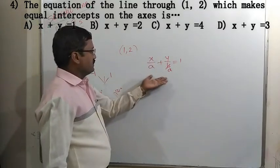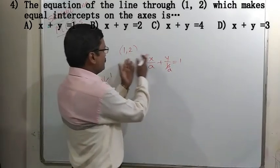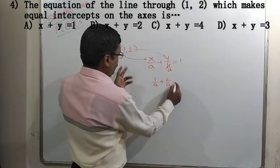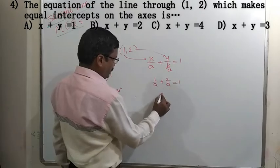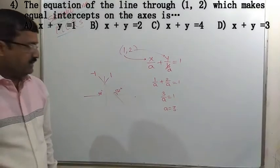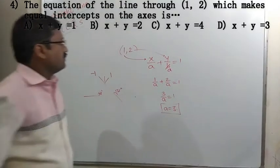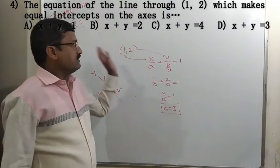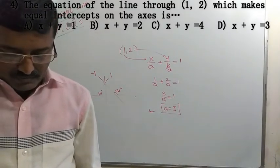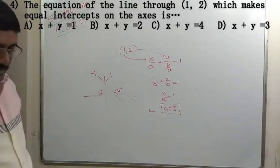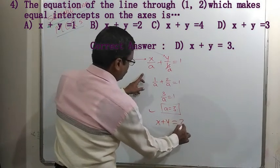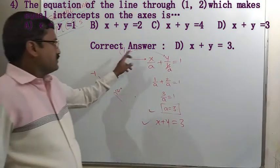The intercept is a = 3, though this exact option may not appear directly. Remember that when a line makes equal intercepts, its slope is ±1, and by substituting the given point into the double intercept form we determine the intercept value.